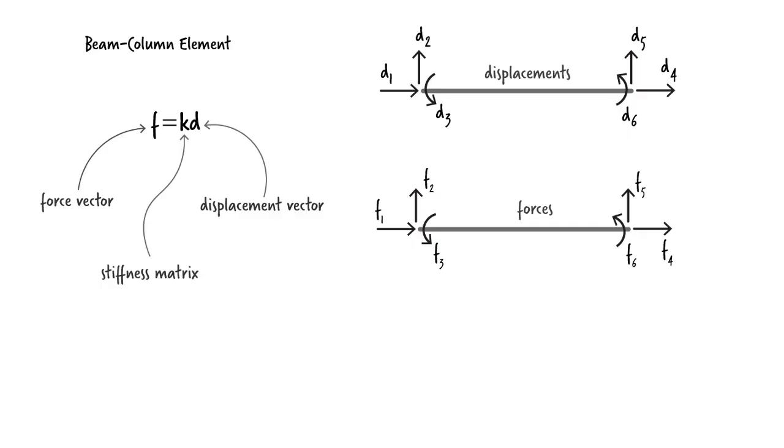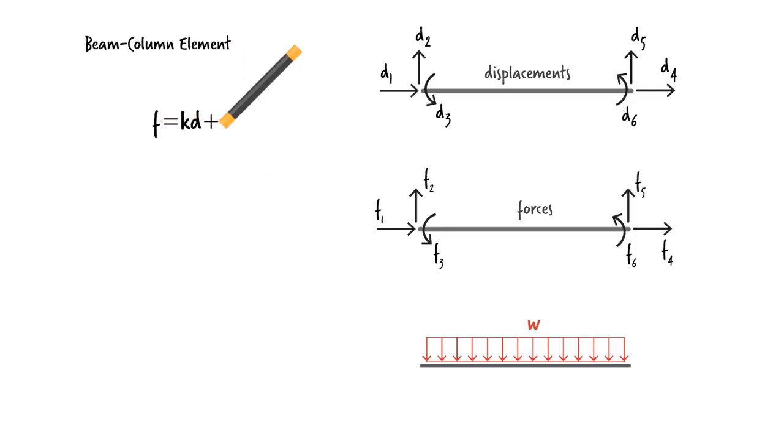When the member is subjected to a load, say a distributed load of W, then the equation becomes F equals K times D plus P, where P represents fixed end forces due to the member load. In the case of a uniformly distributed load of W applied to a member of length L, the elements of P are given.